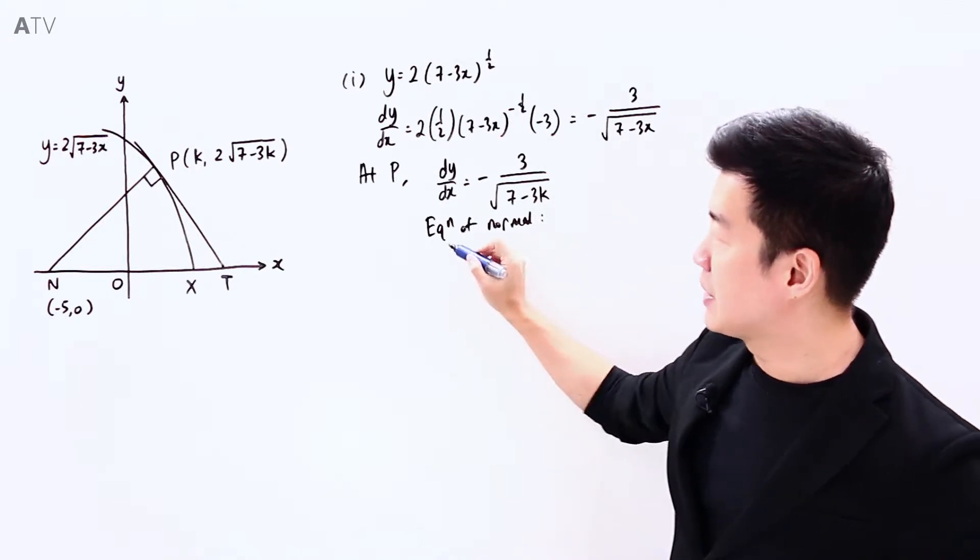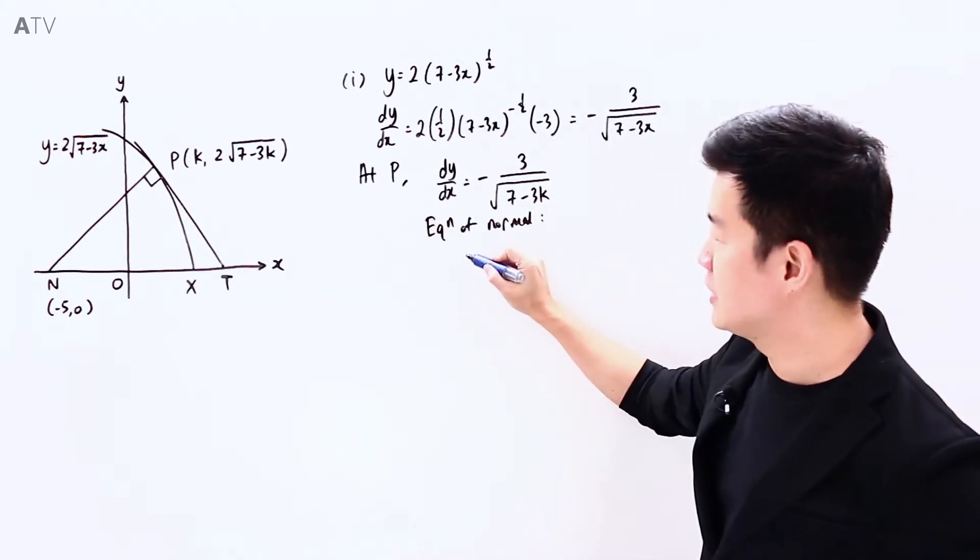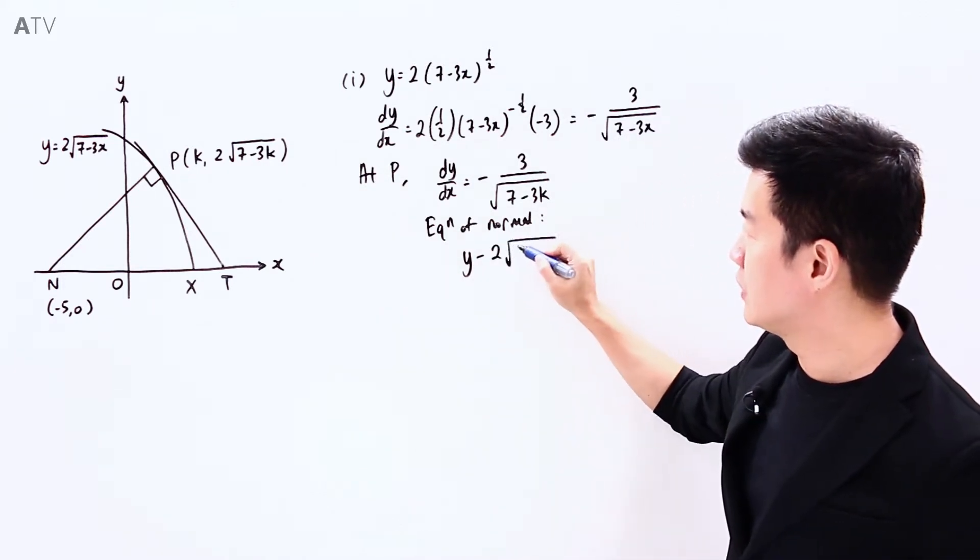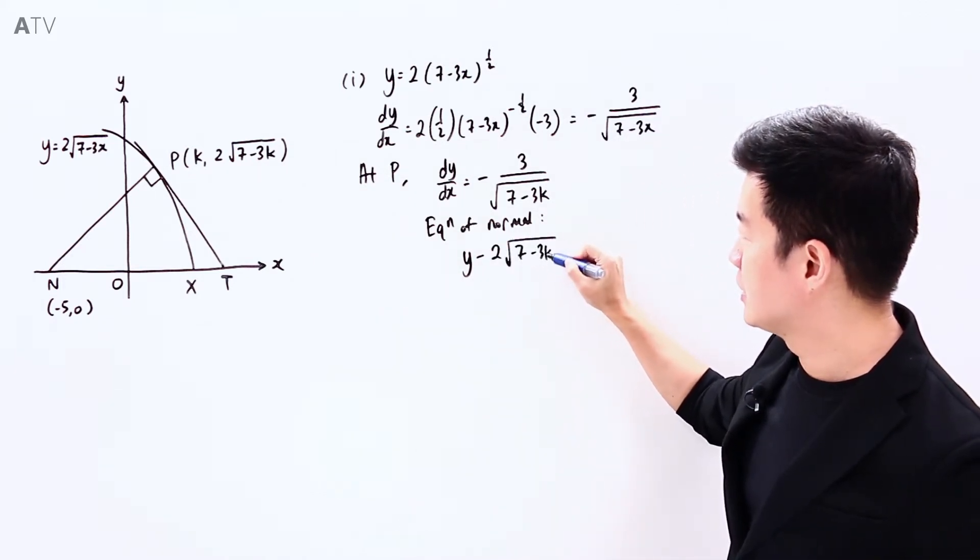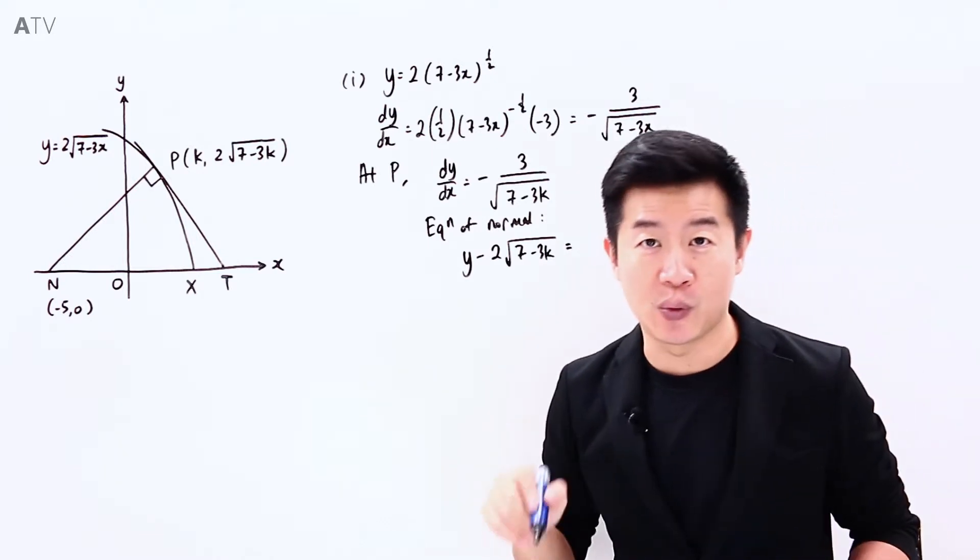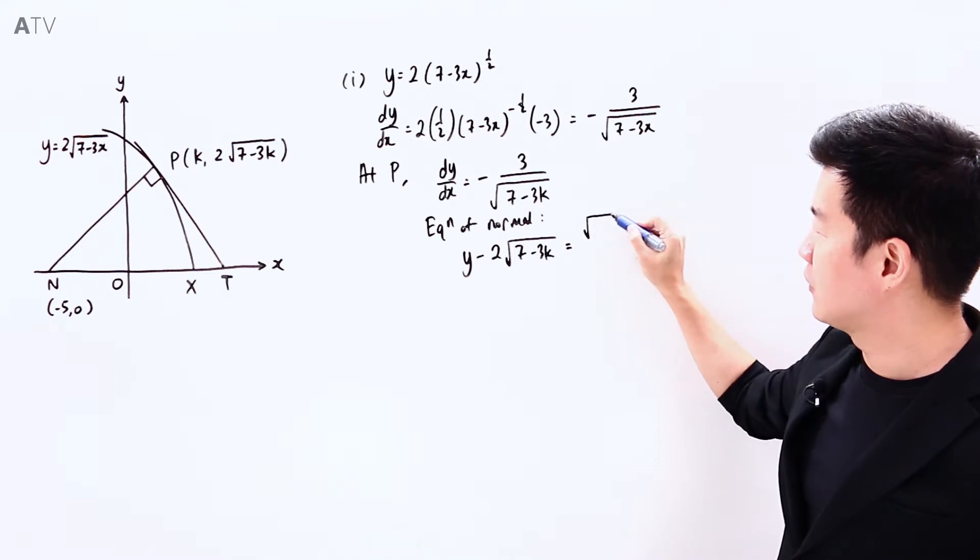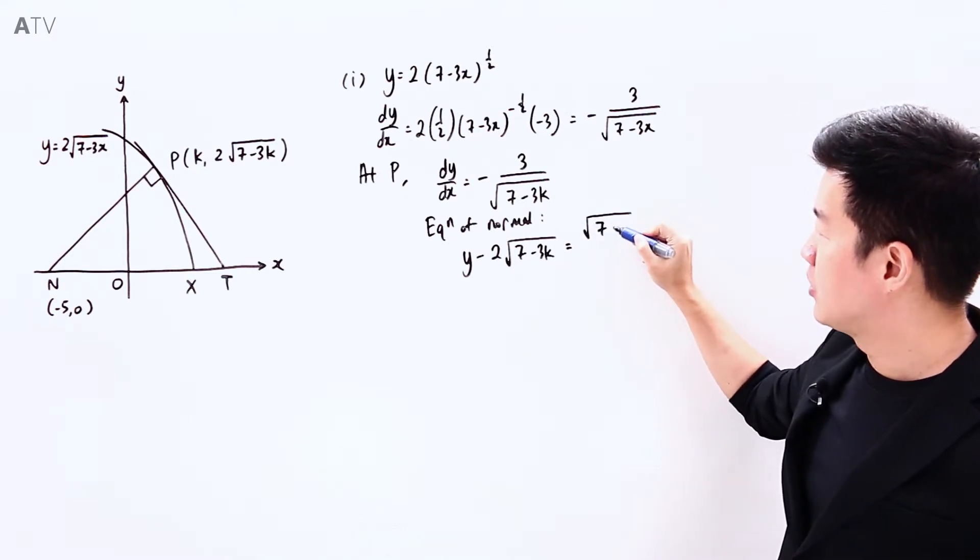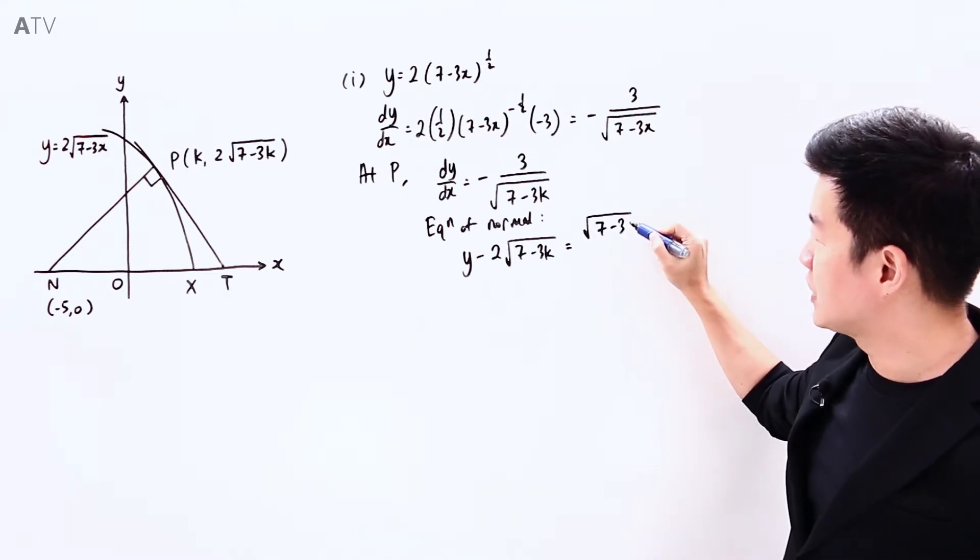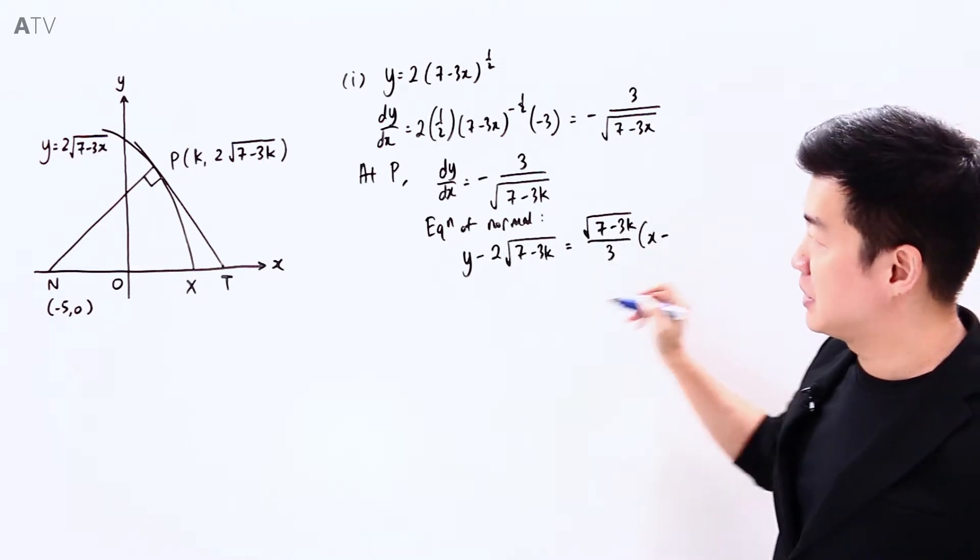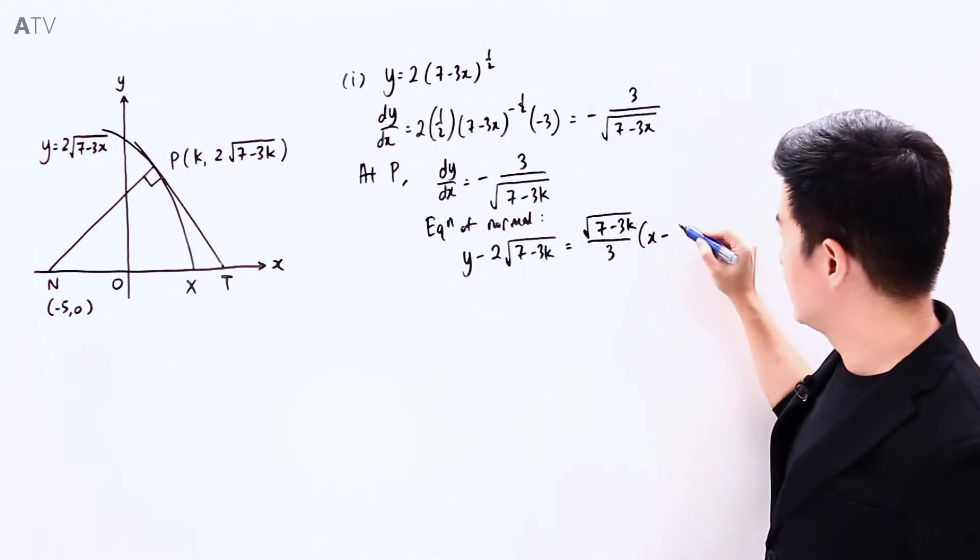Because it passes through this point, we will take y minus the y coordinate, which is 2 square root of (7 minus 3k). It's going to be equal to the gradient. The gradient of the normal is positive square root of (7 minus 3k) divided by 3, then x minus the x coordinate, which is k.